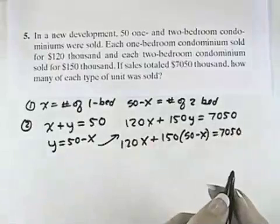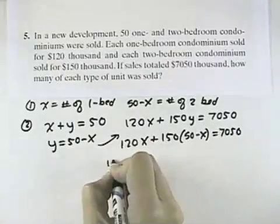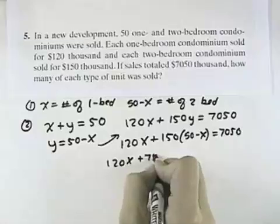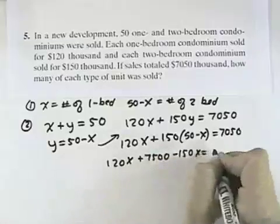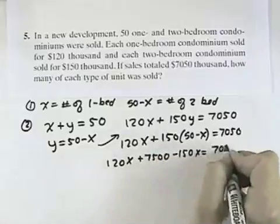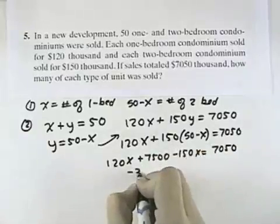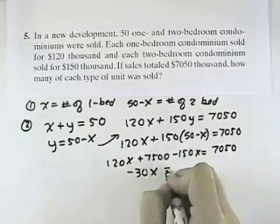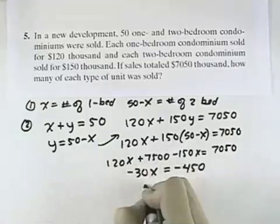From there, we can multiply this out to get 120X plus 7,500 minus 150X equals 7,050. Combining like terms, negative 30X, and subtracting 7,500 from both sides, equals negative 450,000.